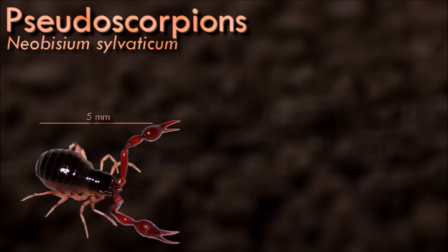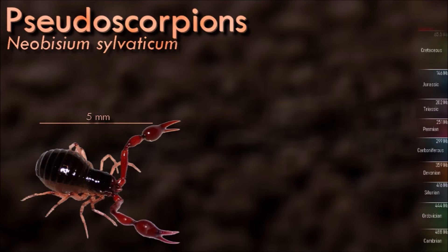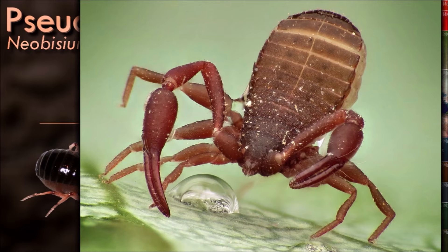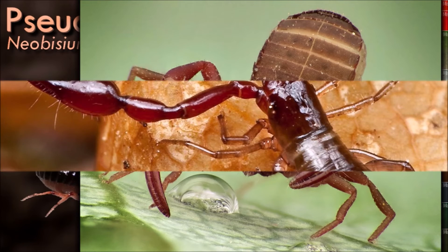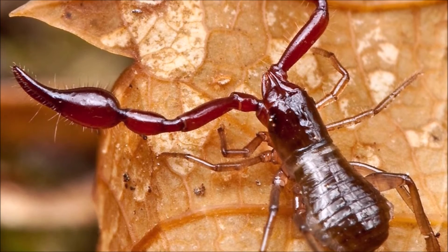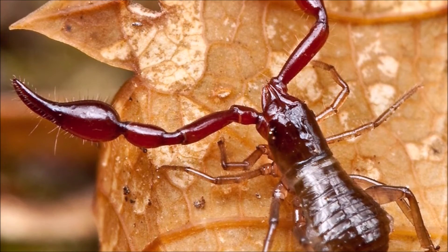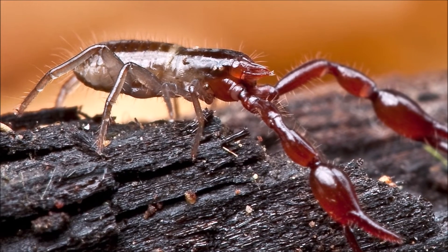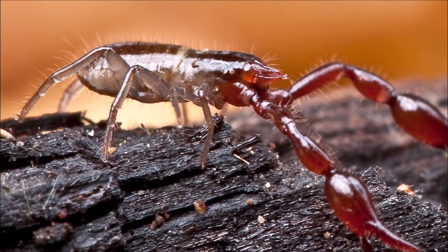Pseudoscorpions are generally beneficial to humans since they prey on clothes moth larvae, carpet beetle larvae, and mites. They are tiny and are rarely noticed due to their small size, despite being common in many environments. When people do see pseudoscorpions, especially indoors, they are often mistaken for ticks or small spiders. Pseudoscorpions often carry out phoresis, a form of commensalism in which one organism uses another for the purpose of transport.